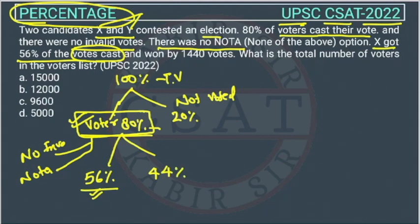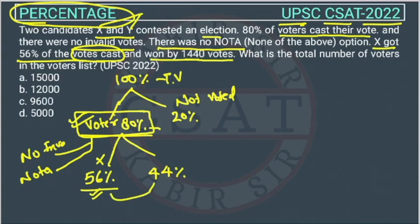X is getting 56% of the vote cast and won by 1440 votes. So the difference between X and Y is 56% minus 44%, which equals 12%. This means X won by 12% of the total votes cast.